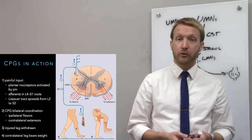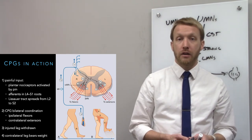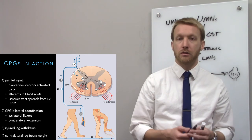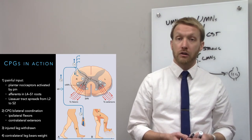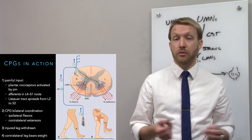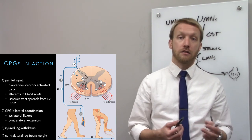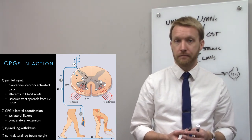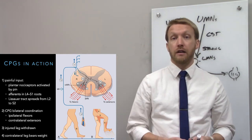The spinal cord does have gray matter, and that gray matter is a collection of interneurons and motor neurons. Those interneurons create different patterns of output depending on the input — whether it's pain, a little stretch, or too much tension at the tendon. Different inputs give you different outputs.